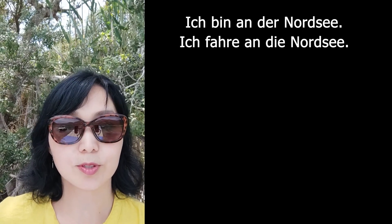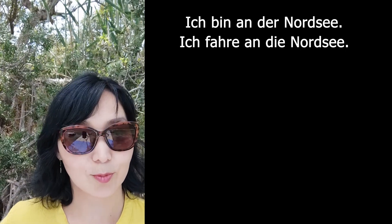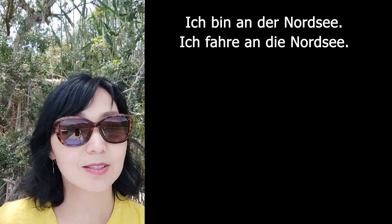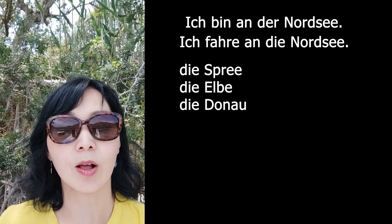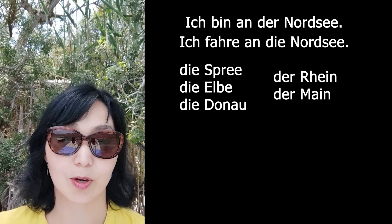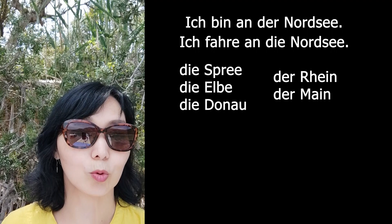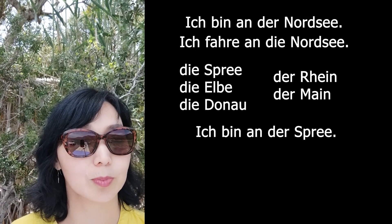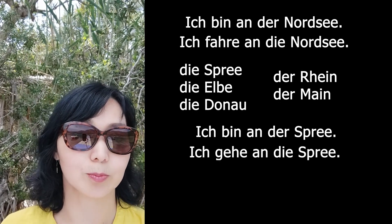Возьмём какую-нибудь речку. Например, через Берлин течёт река Spree. Внимание — проверяйте всегда род рек! В основном немецкие реки женского рода: die Spree, die Elbe, die Donau. Но есть и мужского рода: der Rhein, der Main. Если я у реки женского рода: Ich bin an der Spree. Если я туда двигаюсь: Ich gehe an die Spree.